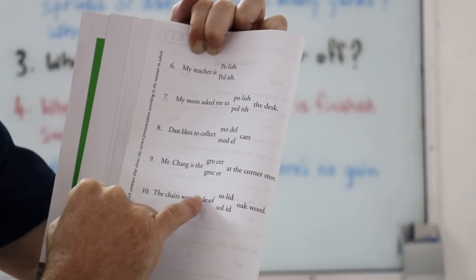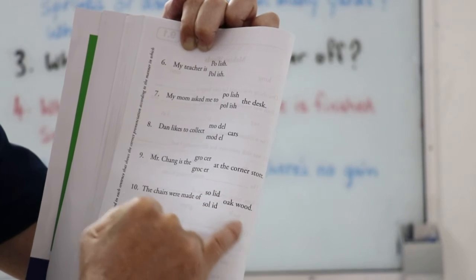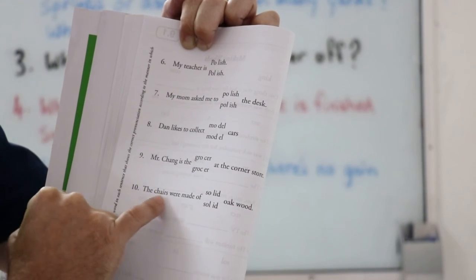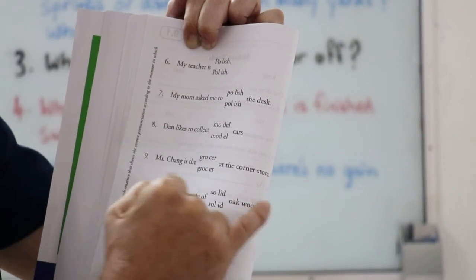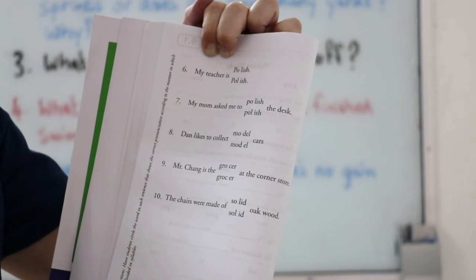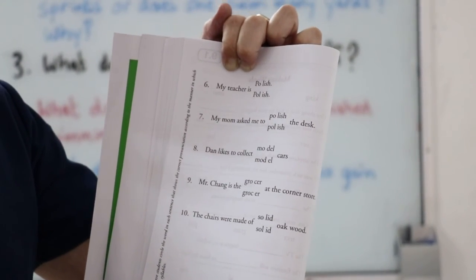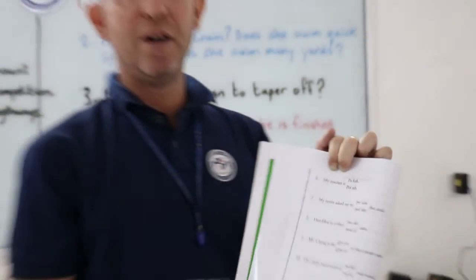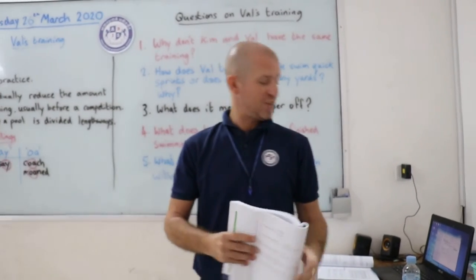Number ten, the chairs were made of solid oak wood or the chairs were made of solid oak wood. So, just put a circle around the correct answer there. And then when you're finished, please take a photo and send back to me on Class Dojo.